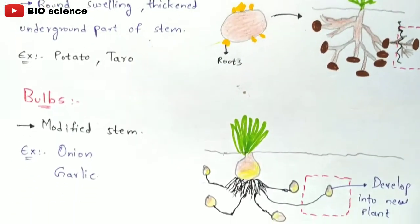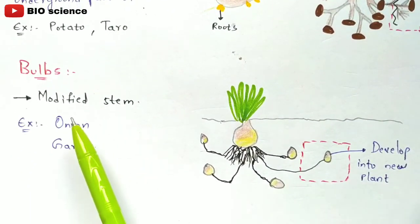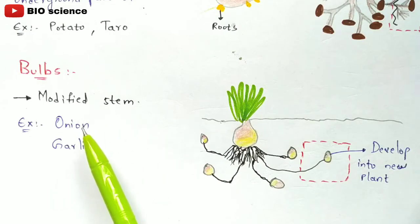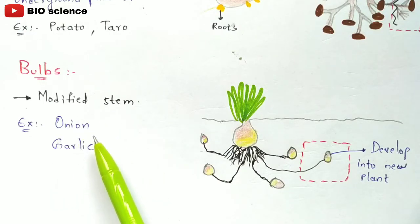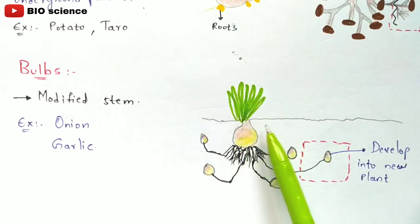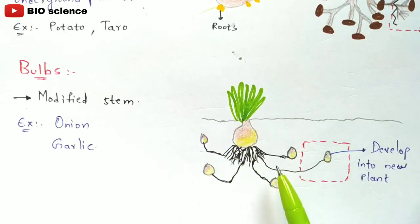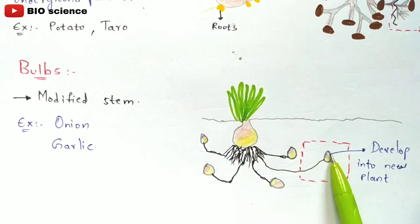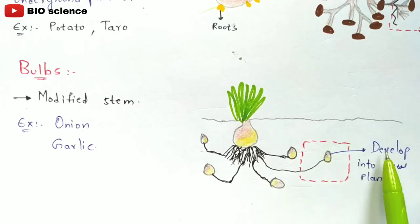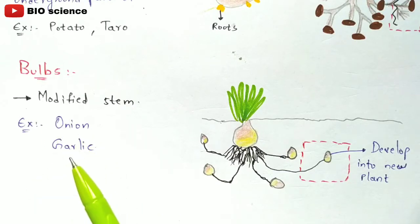Bulbs are modified stems — examples include onion and garlic. From the roots of an onion, many new onions will be developed. If you cut this particular onion, it becomes individual and develops its own root system as well as shoot system, growing into a new plant.